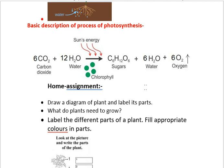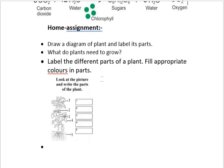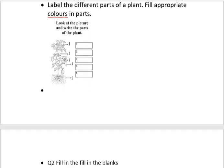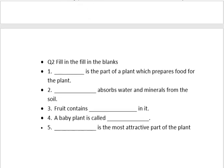Now for today's assignment: first, you have to draw a diagram of any plant and label its parts. Second question is — what do plants need to grow, meaning what are the conditions which a plant needs to grow? Third, you have to label the parts of the figure I have given you, similar to the diagram shown, and write the different functions of these parts as a quick revision.